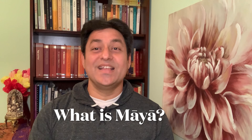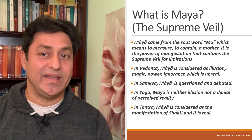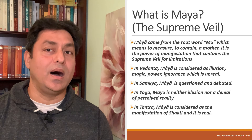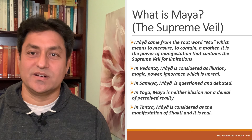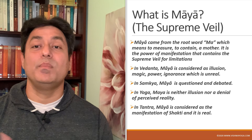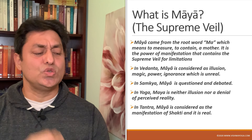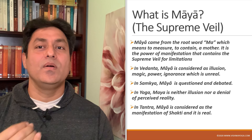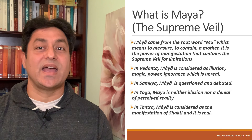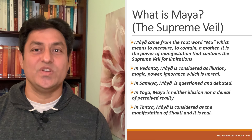Now the word Maya. The best translation can be said as the Supreme Veil. The word Maya comes from the root word Ma, which means to measure, to contain. It also means a mother. It is the power of manifestation that contains the supreme veil for limitations. In Vedanta, Maya is considered as illusion, magic, power, ignorance — which is unreal.